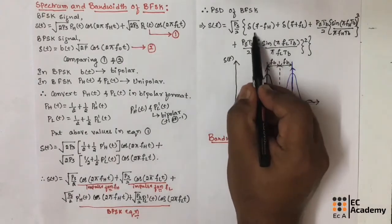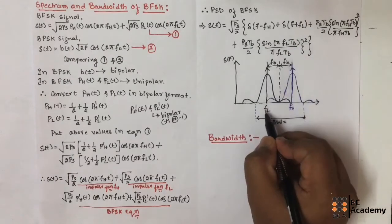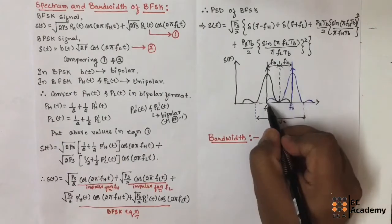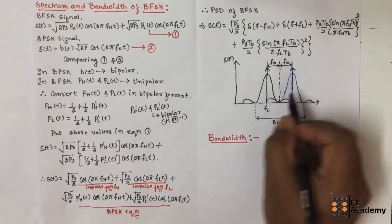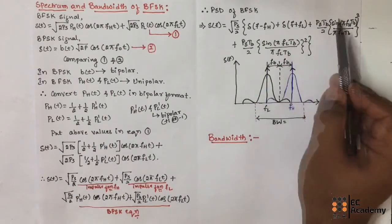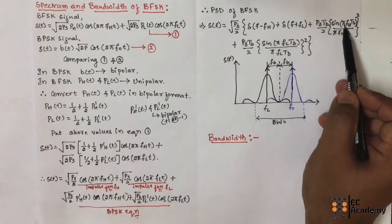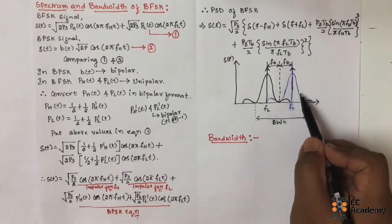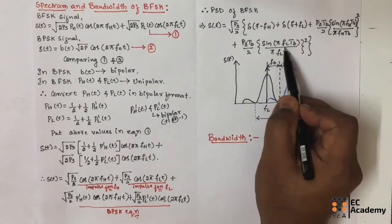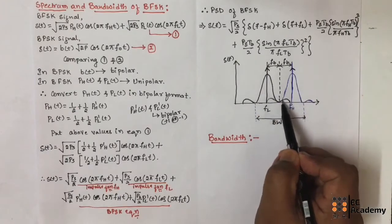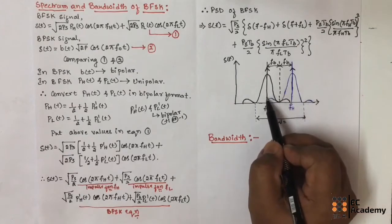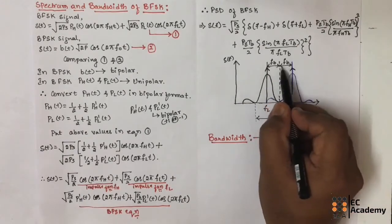Let us represent these two impulse functions first. We write frequency fl and frequency fh, and draw the impulse functions representing them. Along with that, a sinc function is centered at frequency fh and another sinc function is centered at frequency fl.